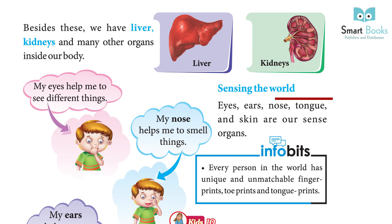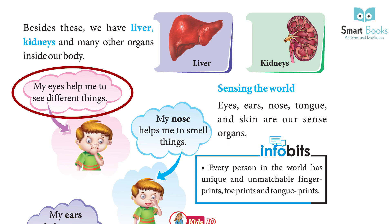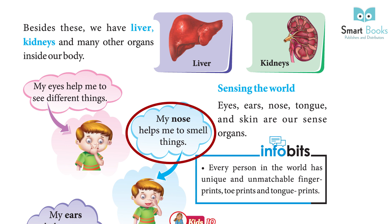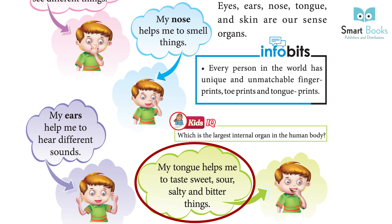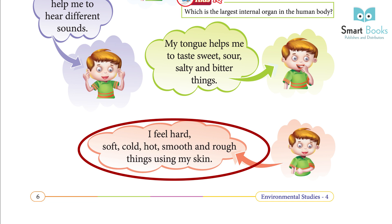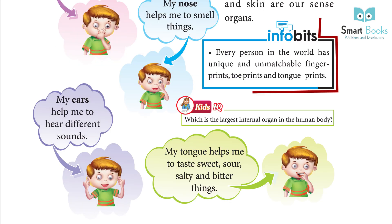Sensing the world. Eyes, ears, nose, tongue, and skin are our sense organs. My eyes help me to see different things. My nose helps me to smell things. My ears help me to hear different sounds. My tongue helps me to taste sweet, sour, salty, and bitter things. I feel hard, soft, cold, hot, smooth, and rough things using my skin.